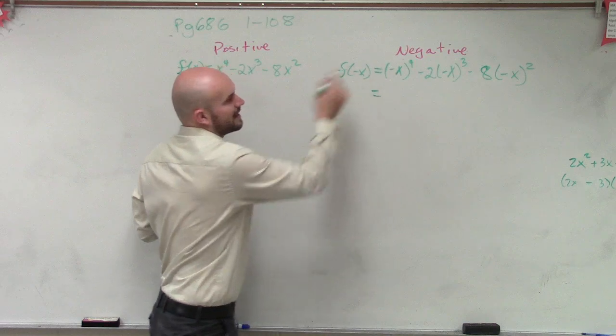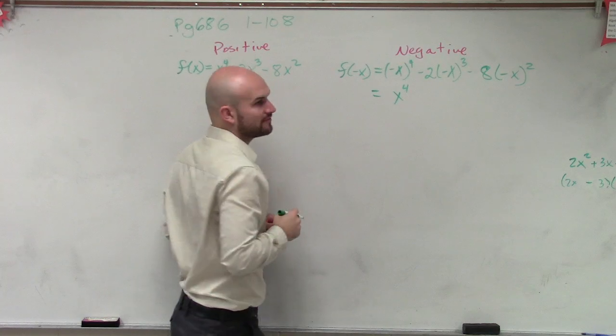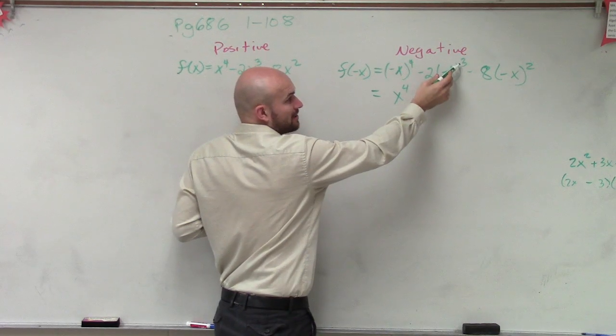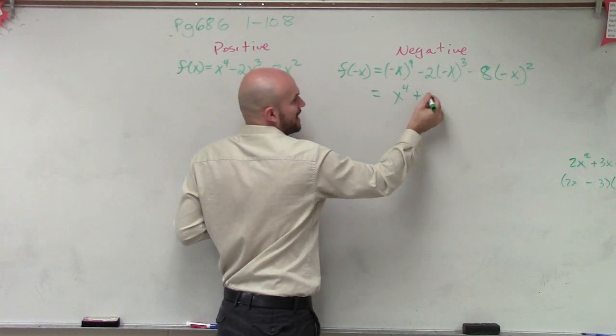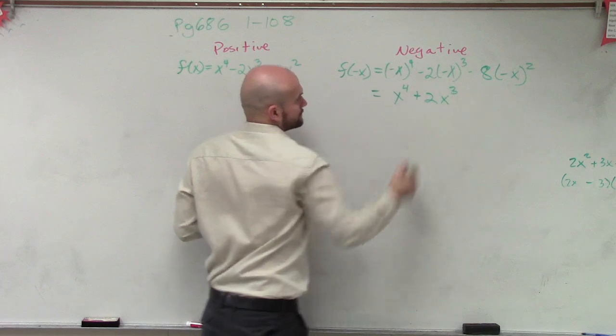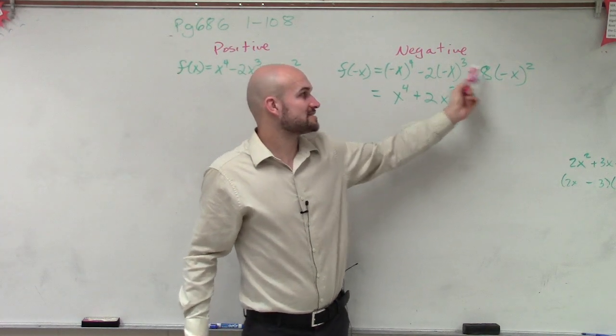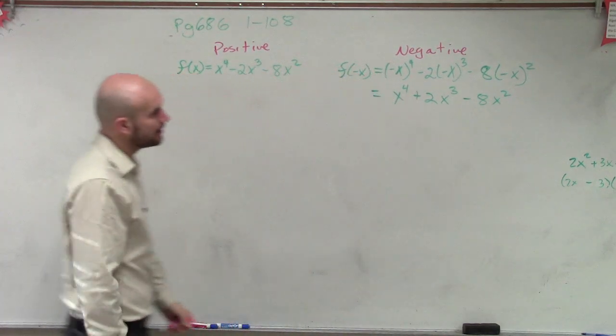Well, ladies and gentlemen, anything raised to an even power is always going to be positive. So that's going to be a positive x to the fourth. Anything or a negative number raised to an odd power is still going to remain negative. Negative times negative now turns this to a positive. This is negative raised to an even power, so now it's positive. Positive times negative now turns you to a negative 8x squared.